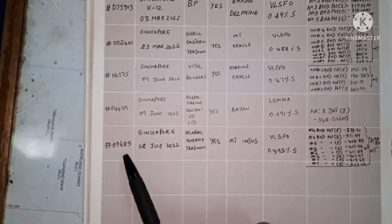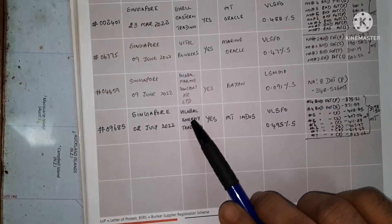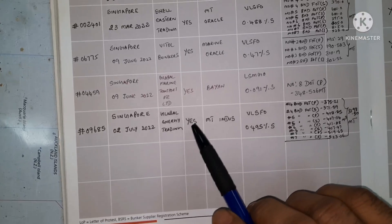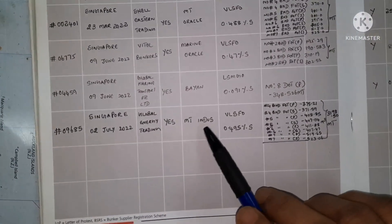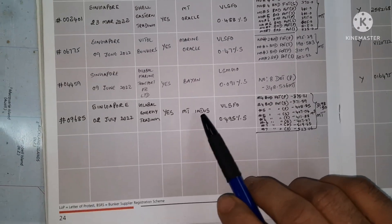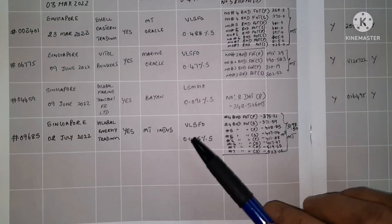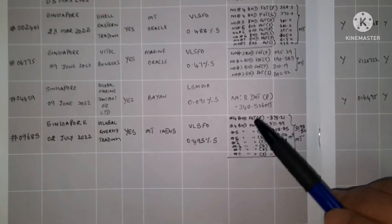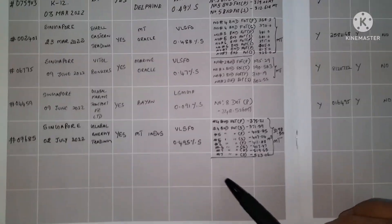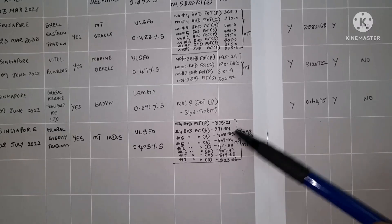Here you can see the BDN number. Here we write the place of bunker and date of bunker, the supplier name, and whether the supplier is registered. The supplier barge or bunker barge name is also recorded. Very importantly, the sulfur content of the particular fuel is noted. This section also has the loading tank details — which tank was loaded and how much was taken. That information will be there in Record 1.